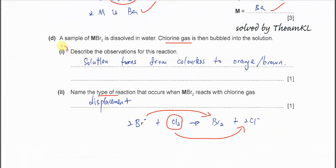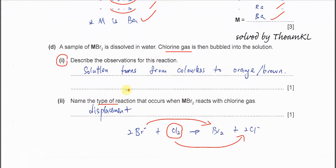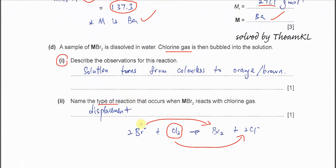For part one again, describe the observations for this reaction. Very easy. Initially the solution is colorless because bromide is colorless. So when the bromine forms, this bromine will form the orange solution, the bromine water. So it turns from colorless to orange. The type again is displacement.